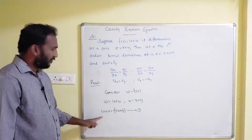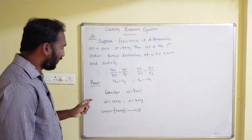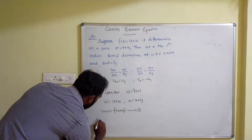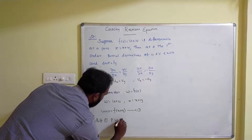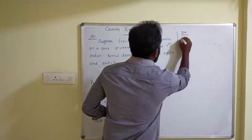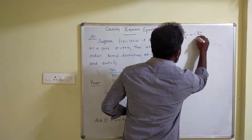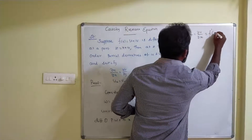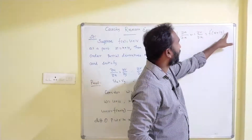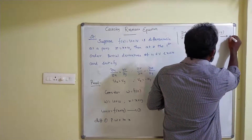From this equation, we are going to differentiate partially with respect to x and y. Differentiating equation 1 partially with respect to x, we get: ∂u/∂x + i·∂v/∂x = f'(x + iy). Since x is the variable, differentiating x gives 1 and y is constant giving 0, so the result is f'(x + iy). Take this as equation number 2.